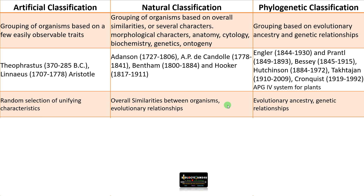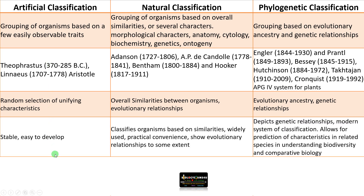In phylogenetic classification, evolutionary ancestry and genetic relationships are considered. The advantage of artificial classification is that it is very easy and rigid — easy to develop without much sophistication or knowledge. Natural classification is widely used and widely accepted because of its practical convenience; it can even be done in a laboratory without much sophistication and shows evolutionary relationships to some extent.